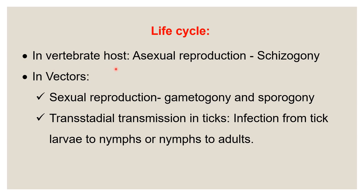In the invertebrate host — the tick vector — there is sexual reproduction: gametogony and sporogony. The transmission in tick vectors is trans-stadial transmission — transmission from tick larva (one stage/stadium) to nymph (another stage/stadium), and from nymph to adult. Stage-to-stage or stadium-to-stadium transmission is called trans-stadial transmission.